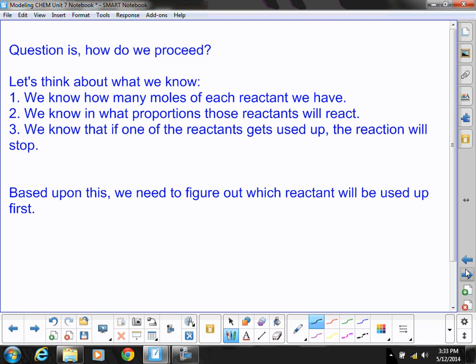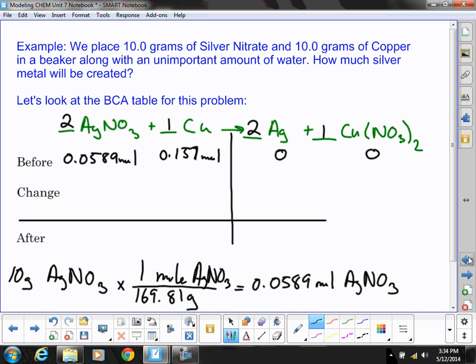Well, that's one of the nice things about the BCA table, is that we can really try anything we want to. And if we make a mistake, it's going to let us know right away. So when we've done this in the past, we've taken one of the substances. And in this case, I'm going to pick copper. And we're going to have that completely react, leaving us with none left over.